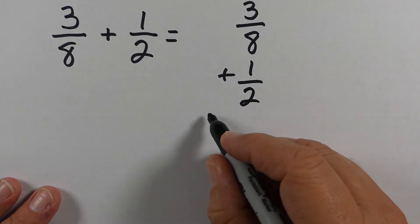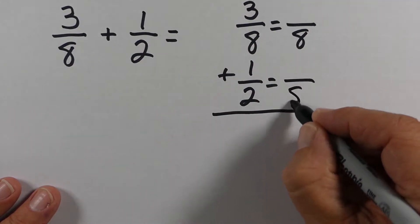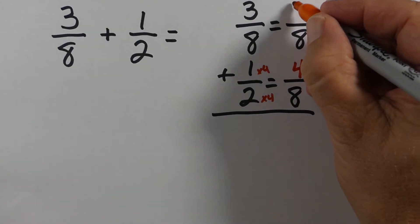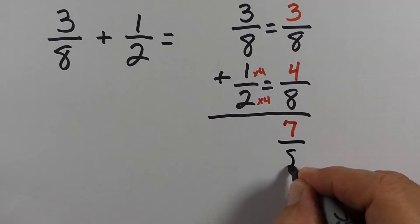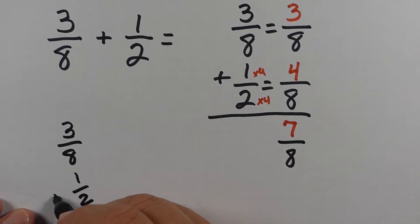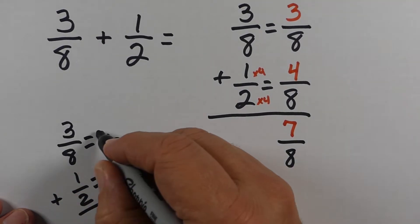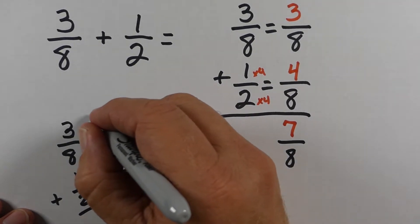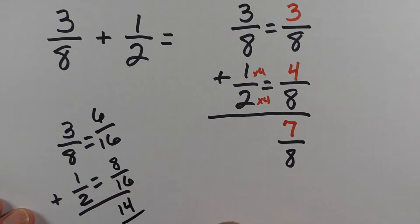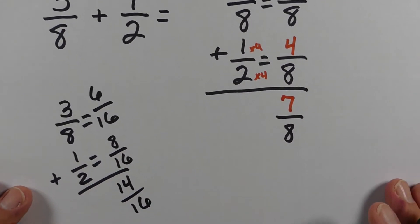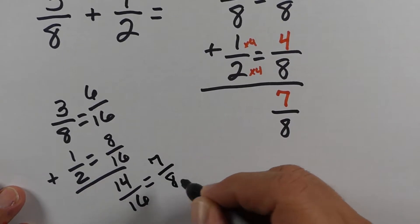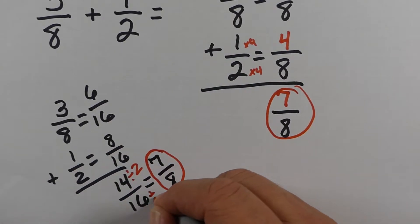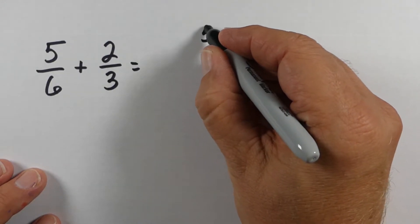For 3/8 plus 1/2, stack them up. 8 is a good common denominator. Multiply both numbers in the bottom fraction by 4. The top fraction doesn't need to change. We end up with 7/8. Now, sometimes people just multiply the denominators together to get a common denominator — in this case you'd get 16. It still works: 6/16 plus 8/16 is 14/16. Divide both by 2 and you get 7/8, just like the other way. It does save a little work if you notice the smaller common denominator.